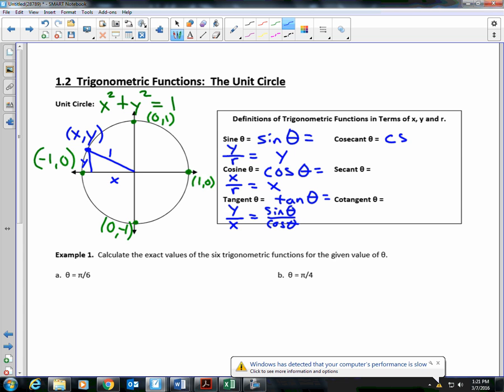Cosecant, C-S-C, that's cosecant, is the reciprocal of sine. So it would be r over y or 1 over y. Secant of theta would be r over x or 1 over x. Again, it's the reciprocal of cosine. And cotangent is the reciprocal of tangent, C-O-T of theta, cotangent of theta. And that would be x over y or cosine over sine.